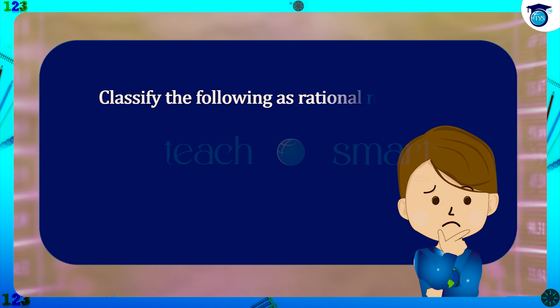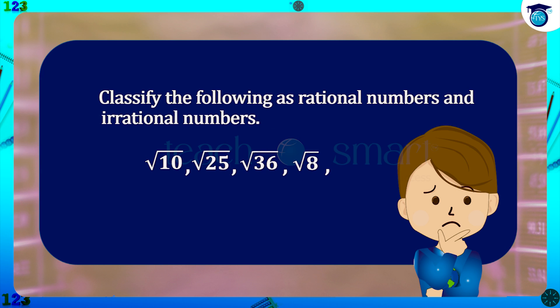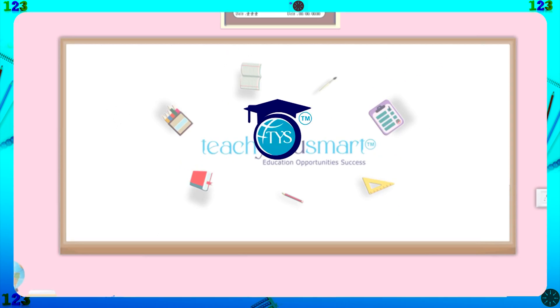Before winding up, let's check how much you understood by doing an activity. Classify the following as rational numbers and irrational numbers: √10, √25, √36, √8, √15. That's all for now.